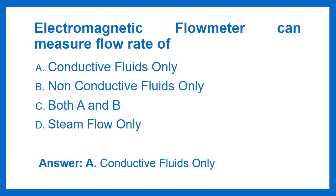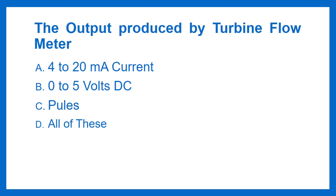The output produced by turbine flow meter: Option A - 4-20 mA current, Option B - 0-5 volts DC, Option C - Pulses, Option D - All of these. The answer is Option C: Pulses.